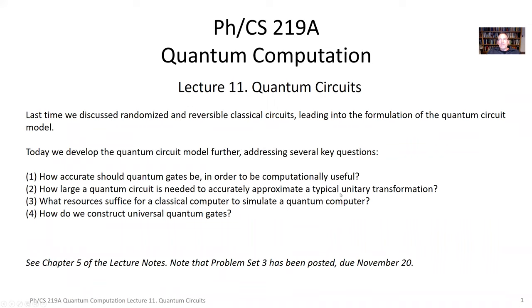We began at the end of the last lecture to discuss quantum circuits and will continue with that today and into lecture 12 as well. Last time, building on the previous discussion of classical circuits, we talked about randomized and reversible classical circuits, which set us up for introducing the quantum circuit model that we had just gotten around to formulating at the end of the previous lecture.